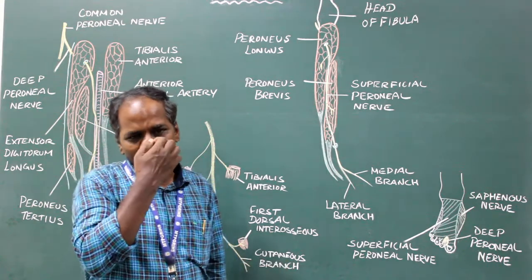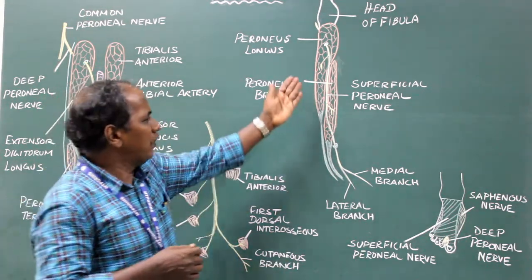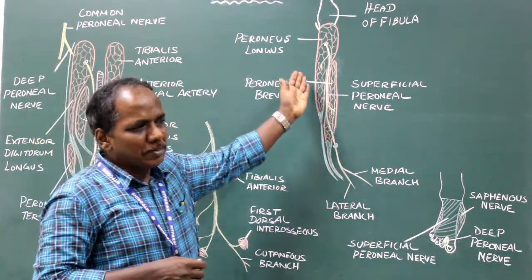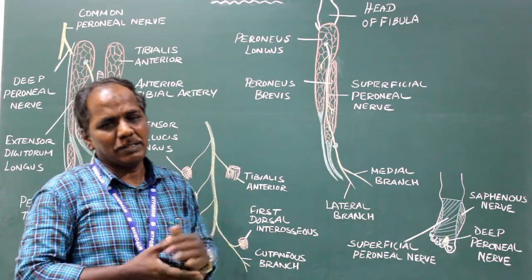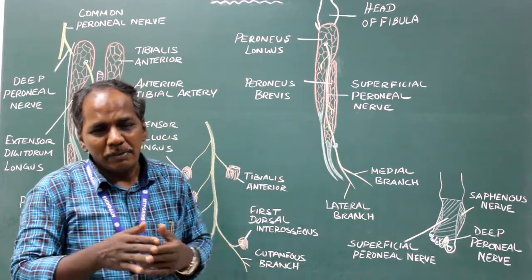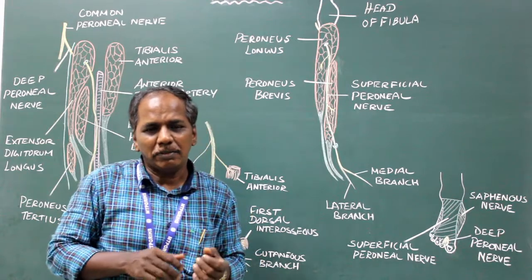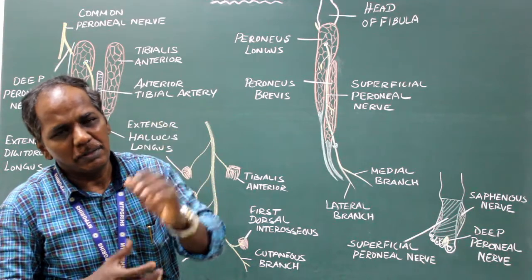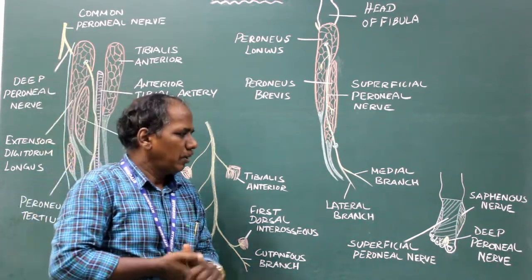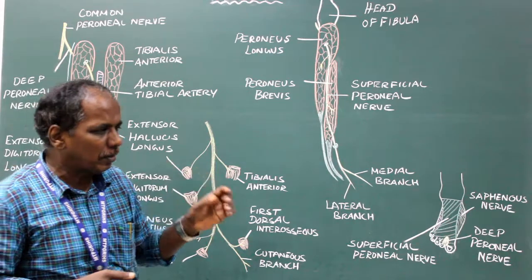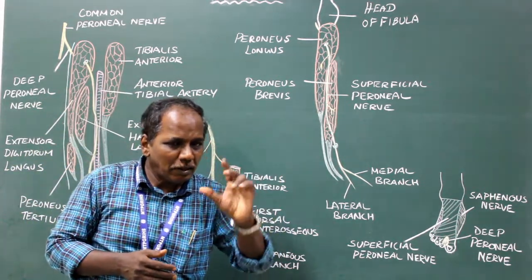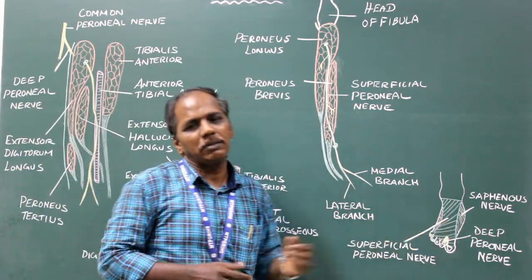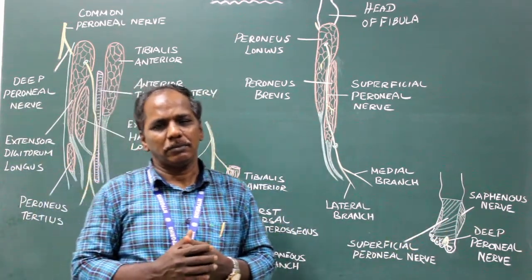Applied anatomy: injury to the superficial peroneal nerve results in paralysis of peroneus longus and peroneus brevis, which are the powerful evertors of the foot, so there is loss of eversion of the foot. There is also paresthesia or sensory loss over the lateral surface of the lower one-third of the leg and over the dorsum of the foot.